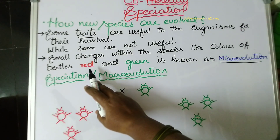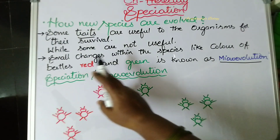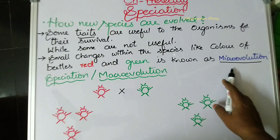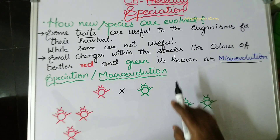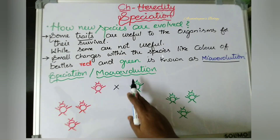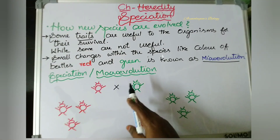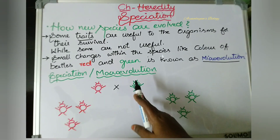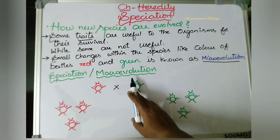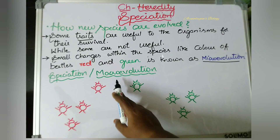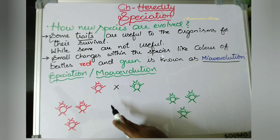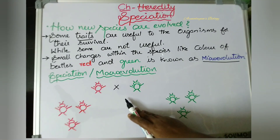For example, red color beetles with a small variation showing green color beetles — that is micro-evolution. Now let's talk about macro-evolution, or speciation. Macro-evolution means it will take a very long time to observe evolution in those organisms. But new species are produced through macro-evolution. That's why new species are produced — so this process is called speciation.